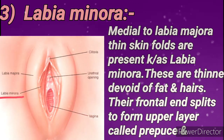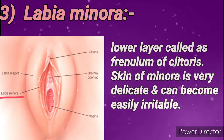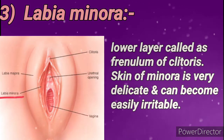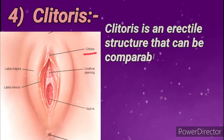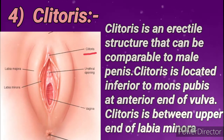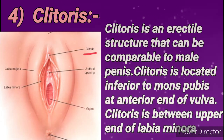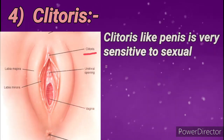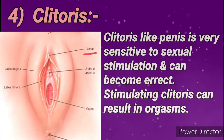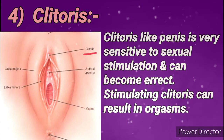The skin of the minora is very sensitive and can become easily irritable. Fourth is clitoris — it is an erectile structure comparable to the male penis. It is located inferior to mons pubis at the anterior end of the vulva, in between the upper ends of labia minora. The clitoris is very sensitive and after stimulation becomes erect; this stimulation leads to orgasms in females.